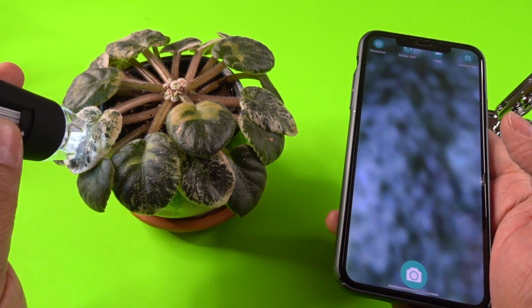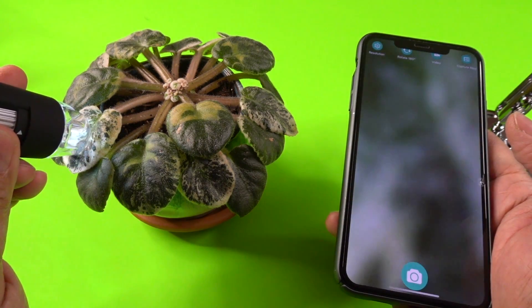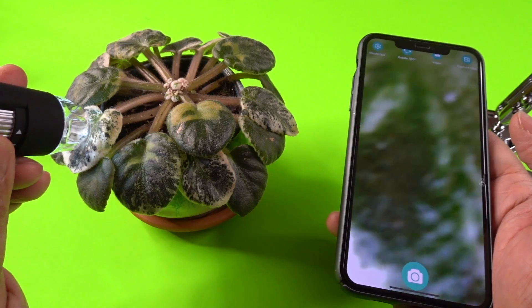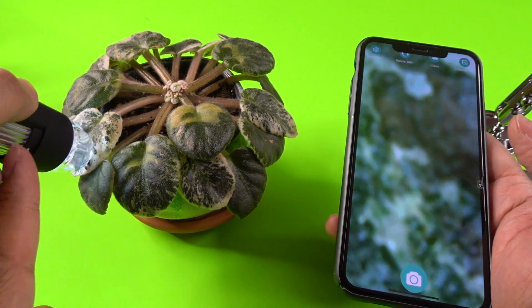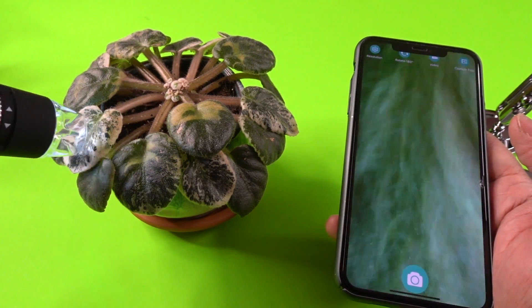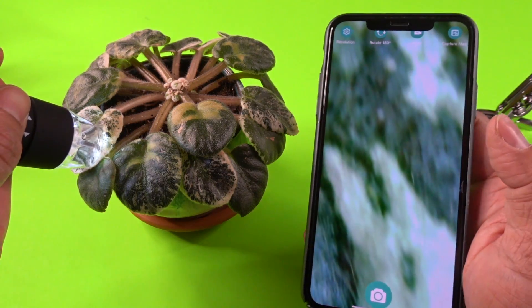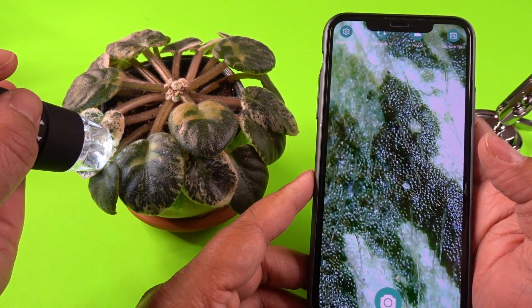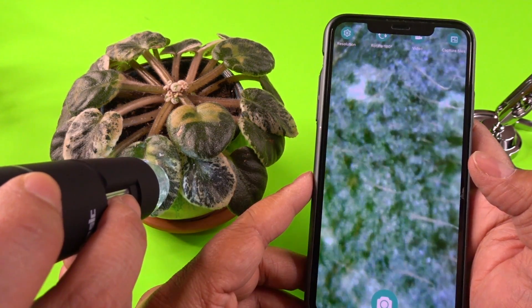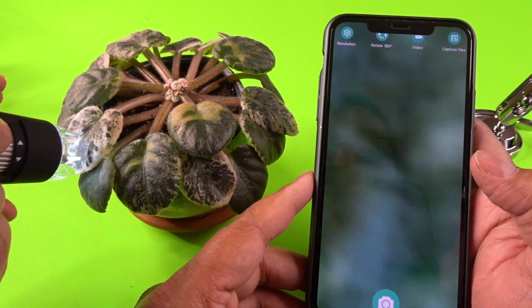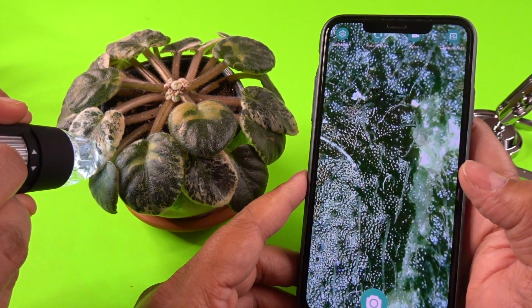So let's change the focus knob right here. And find a way to focus it. Oh here we go. It's getting more. Oh look at that. Let me ask my assistant here to play with the focus. Wow look at that detail of the leaf that we're looking at. Wow look at that detail right there.